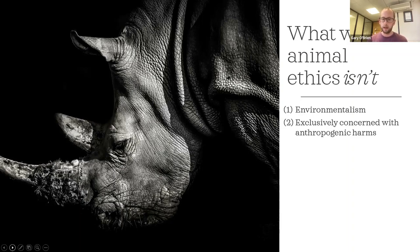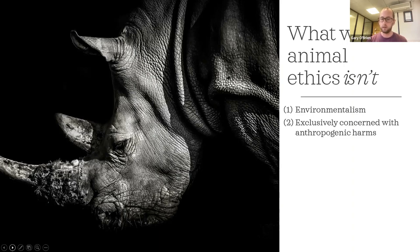Secondly, wild animal ethics isn't exclusively concerned with anthropogenic harms — harms caused by human beings. There are many ways humans harm wild animals, most directly through hunting and fishing, and more indirectly through climate change and pollution. But we're also concerned with what are called naturogenic harms. Most of the harms that wild animals endure have nothing to do with human beings — they're purely the result of natural processes that humans haven't created or started.